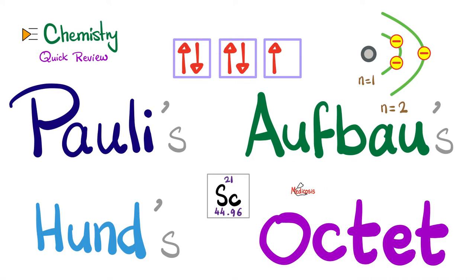Hello, it's Medicosis Perfectionalis. Welcome back to my chemistry quick review playlist. In the previous videos, we talked about atomic theory, atomic number, atomic mass, the periodic table, periodic trends, diatomic elements, electron shells, electron subshells, and electron orbitals. As for today, it's a matter of definition. What is Pauli's principle? How about Aufbau principle? Hund's rule and octet rule. What does the word octet mean? It means eight. Please watch the videos in this chemistry playlist in order for maximum understanding and retention. Let's go.